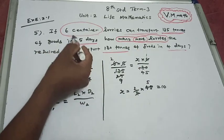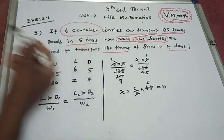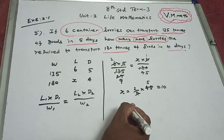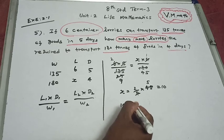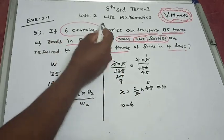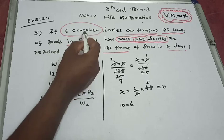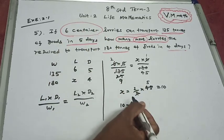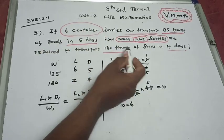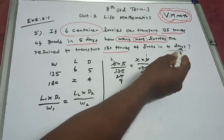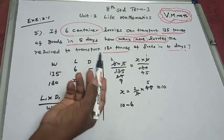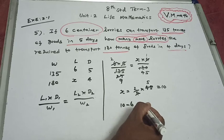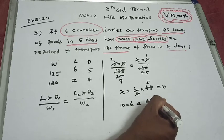We already have 6 container lorries, so 10 minus 6 equals 4. Therefore, 4 more lorries are required to transport 180 tons in 4 days.